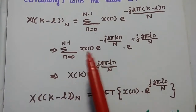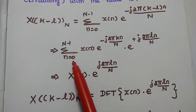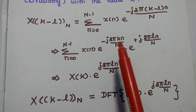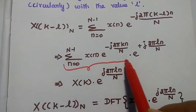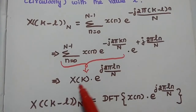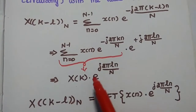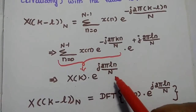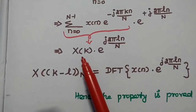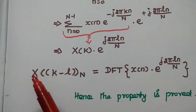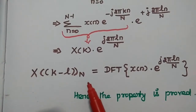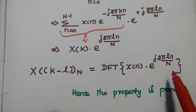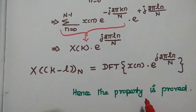From this expression, the term summation n=0 to N−1 of x(n) × e^(−j2πkn/N) is the DFT formula, which is nothing but X(k). So we can write this as X(k) × e^(j2πln/N). Replacing X(k) with DFT of x(n), we get: X((k−l)) mod N = DFT of [x(n) × e^(j2πln/N)]. Hence the circular frequency shift property is proved.